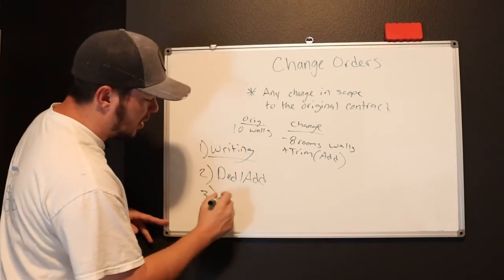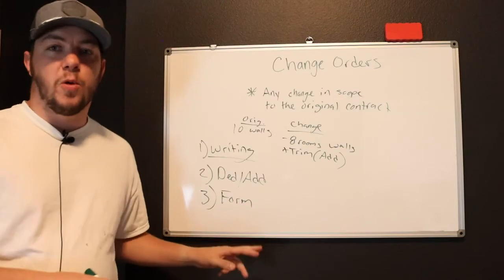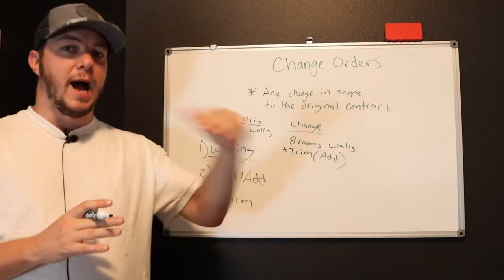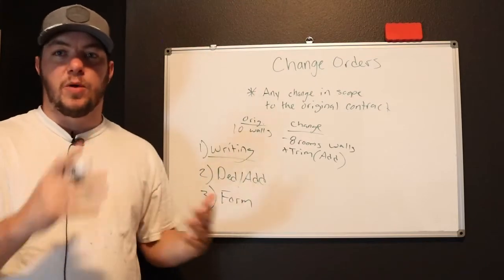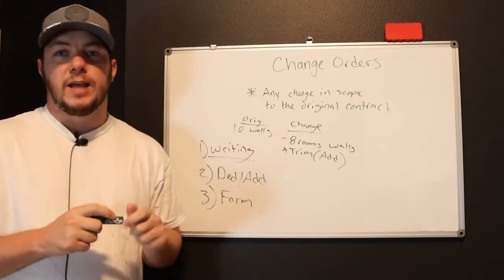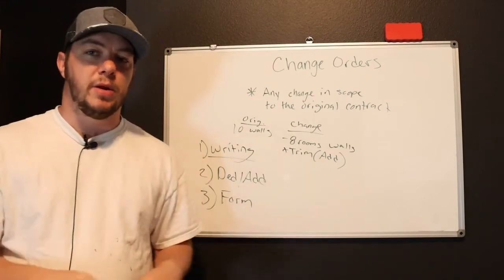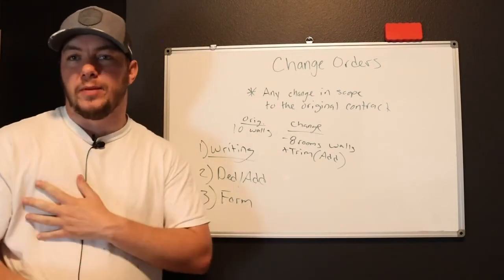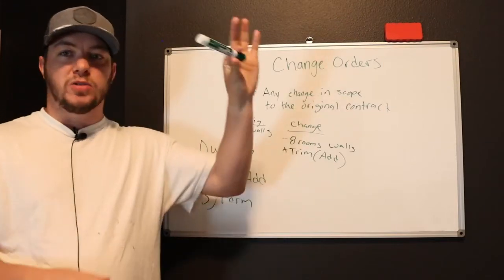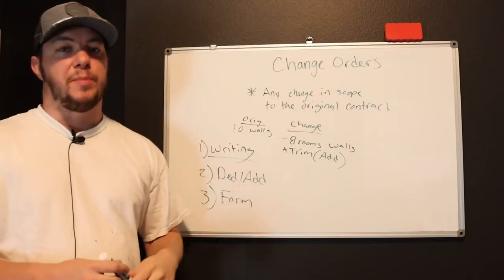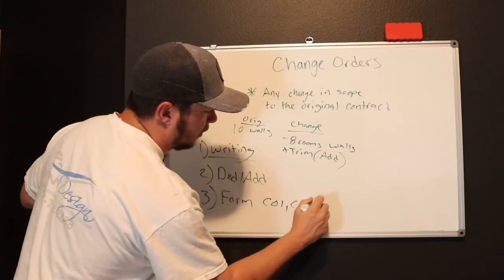And then the next thing you're going to do is you're going to put it on a form, a change order form. Usually this form is going to be—the way I do it—the same form that I use for proposals. So if I send a proposal off for a bid, I take that same form at the top where it says proposal to, and then work to be completed and all that stuff. You can get a copy of that by going to my website, theeasiestbusiness.com/free-downloadable-proposal-template. I just take my proposal form, take away the words proposal and then I put change order one. Change order one, CO1, CO2, etc.